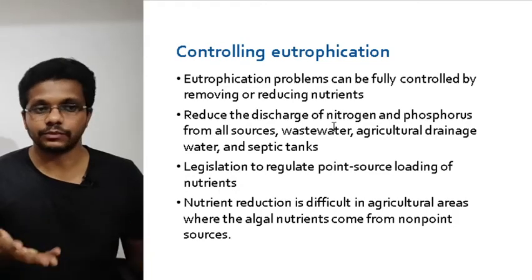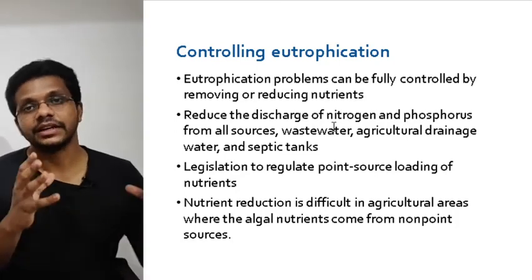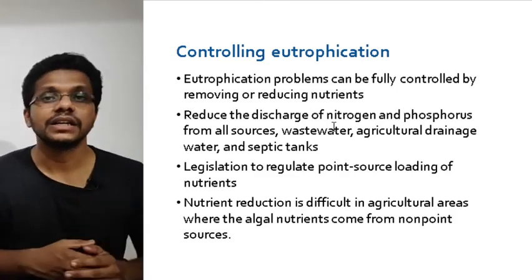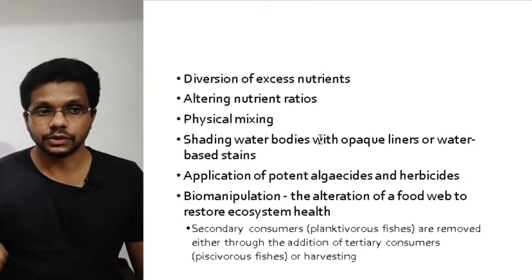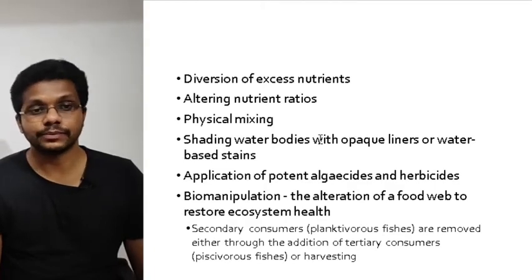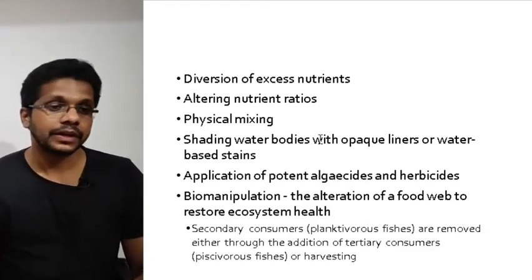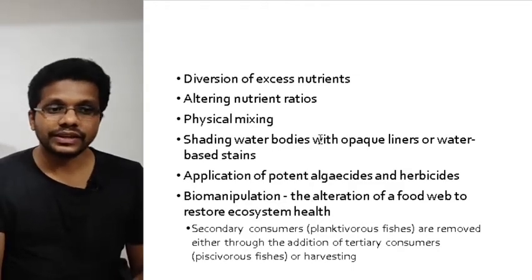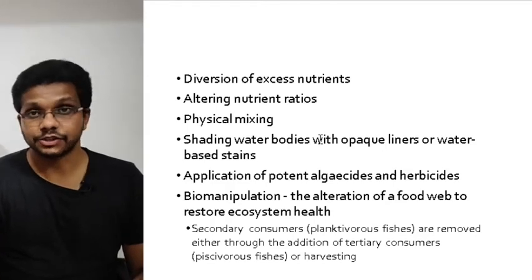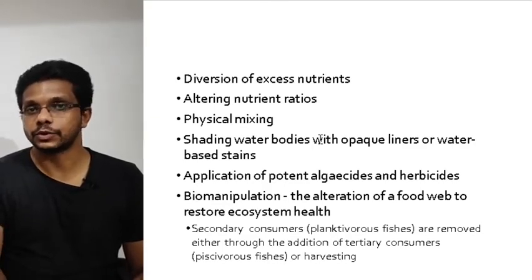Eutrophication can be controlled by removing nutrients, though it is not always easy. Legislation and laws are needed to prevent excessive nutrient discharge into lakes. Different techniques in practice include diversion of excess nutrients, altering the nutrient ratio, physical mixing of the lake, or covering the water surface with an opaque material so photosynthetic algae cannot grow. We can also use algicides or herbicides, and biomanipulation techniques such as introducing predators to consume algae or plankton.